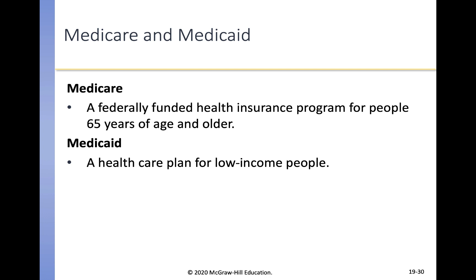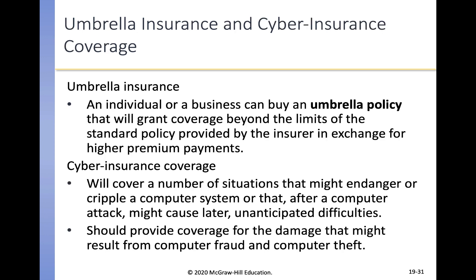Medicaid is a health plan for low-income individuals. Umbrella insurance is a policy that grants coverage beyond the limits of a standard policy in exchange for higher premium payments. If you own a business, you might insure your structure, insure key workers against death, have liability insurance, and also have an umbrella policy — an overarching policy covering things individual policies do not. You might also have cyber insurance, which covers situations that could endanger or cripple a computer system, and provides coverage for damage from computer fraud and theft.